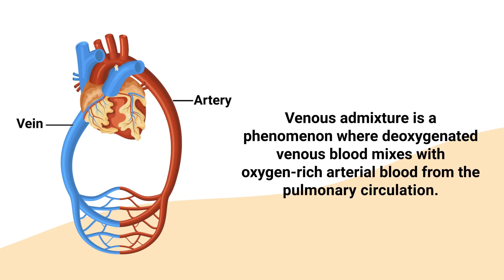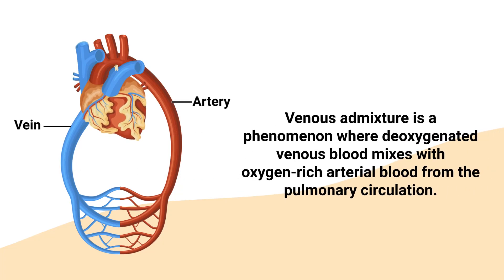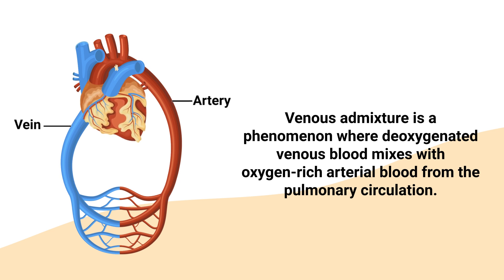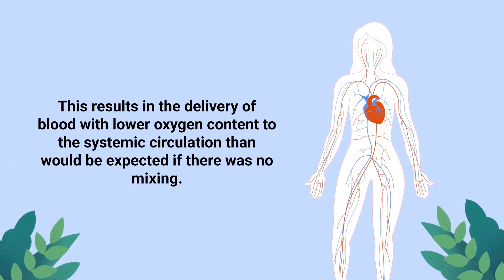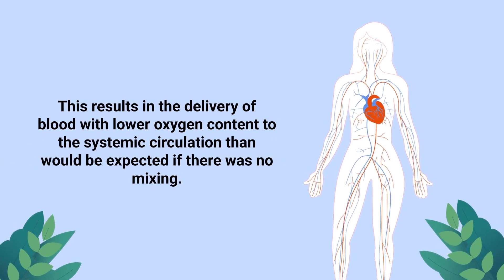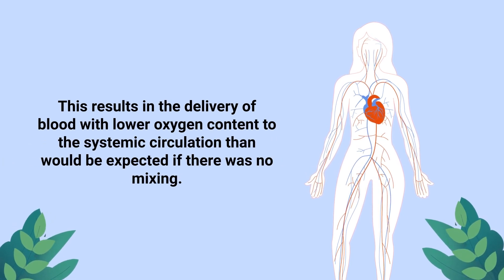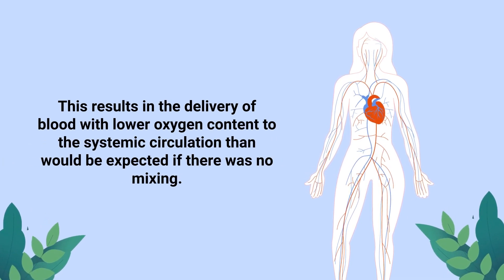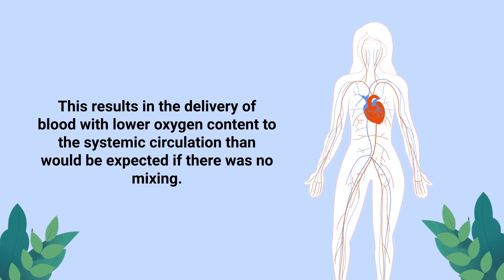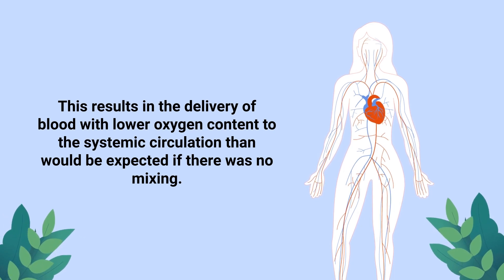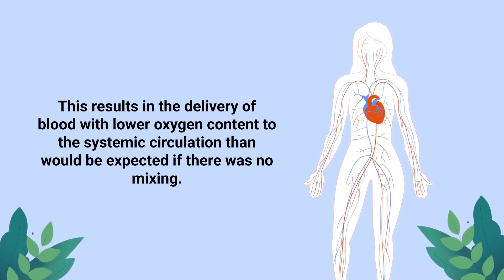Venous admixture is a phenomenon where deoxygenated venous blood mixes with oxygen-rich arterial blood from the pulmonary circulation. This results in the delivery of blood with lower oxygen content to the systemic circulation than would be expected if there was no mixing.